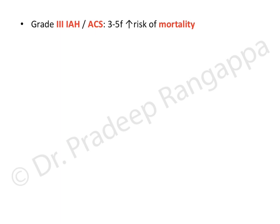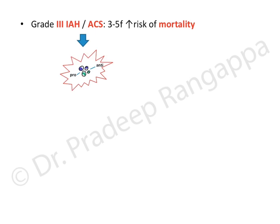When a patient has grade 3 intra-abdominal hypertension and abdominal compartment syndrome, there can be a three- to five-fold increase in the risk of mortality. So this has a direct bearing on morbidity and mortality, and we should be worried about it.